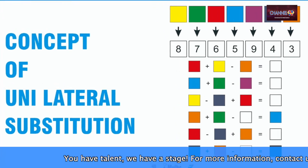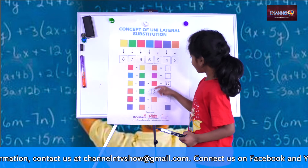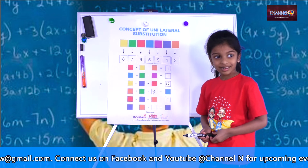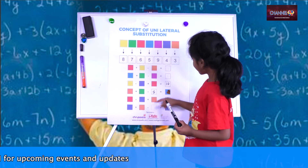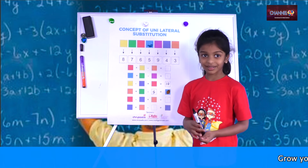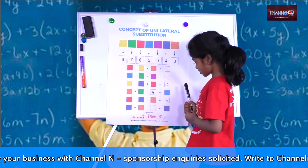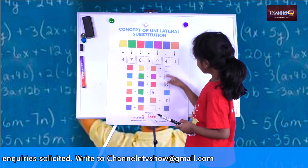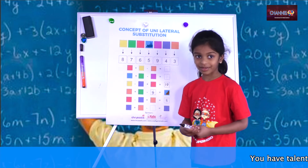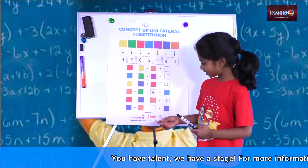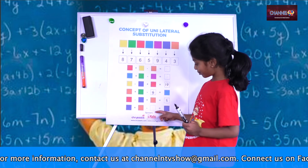Concept of unilateral substitution. Red is 6 minus blue is 4, so 6 minus 4 is 2. Orange is 3, so 2 plus 3 is 5. Blue is 7, so 7 minus blank equals 4, meaning the blank is 3.